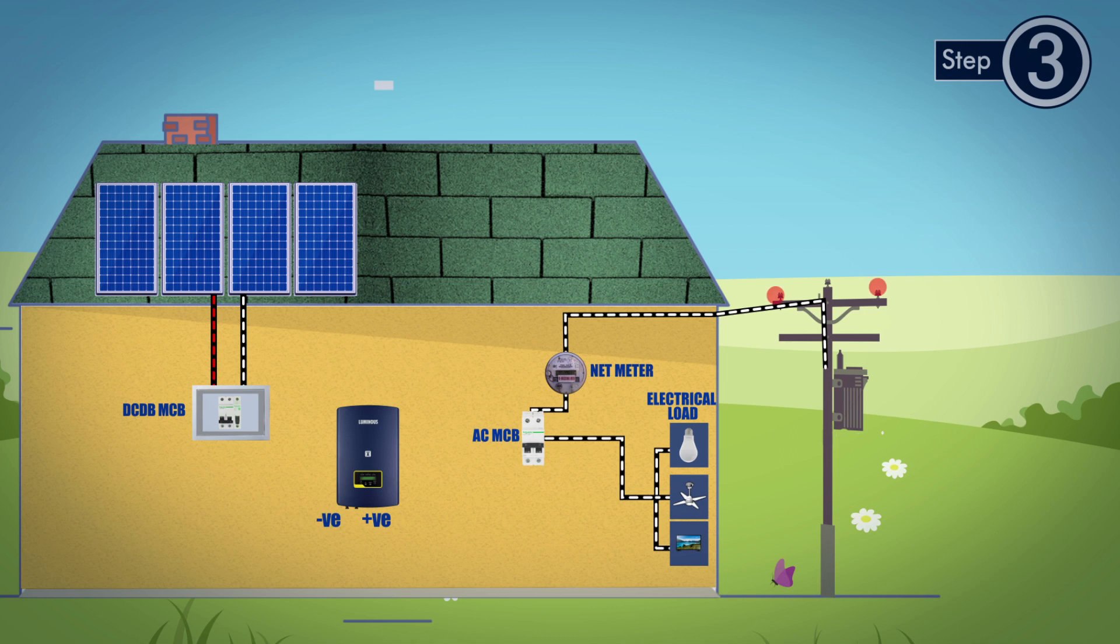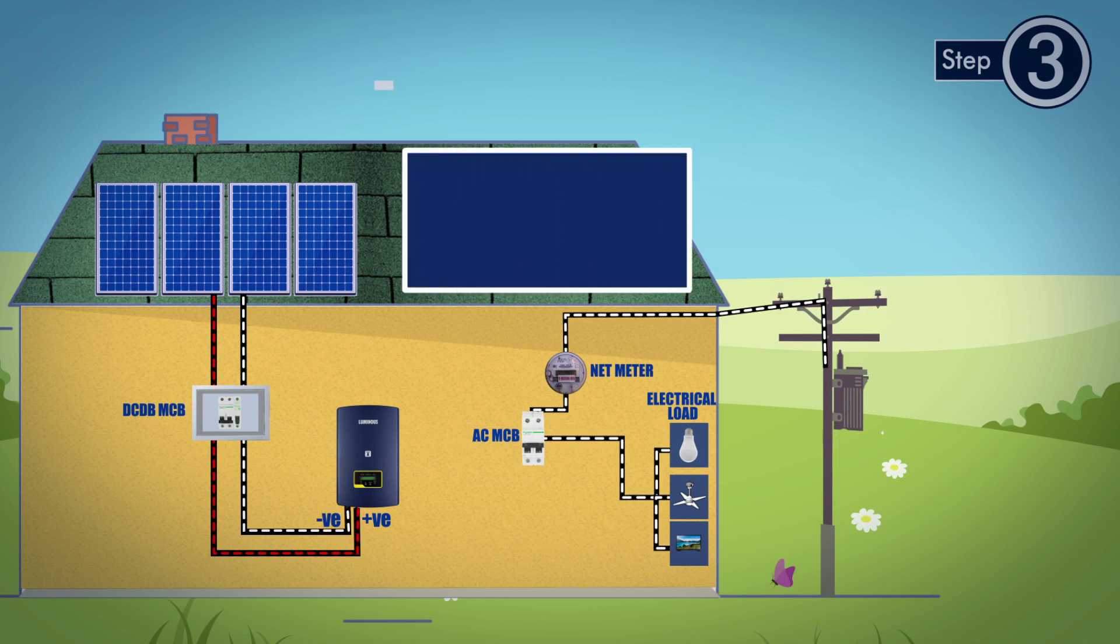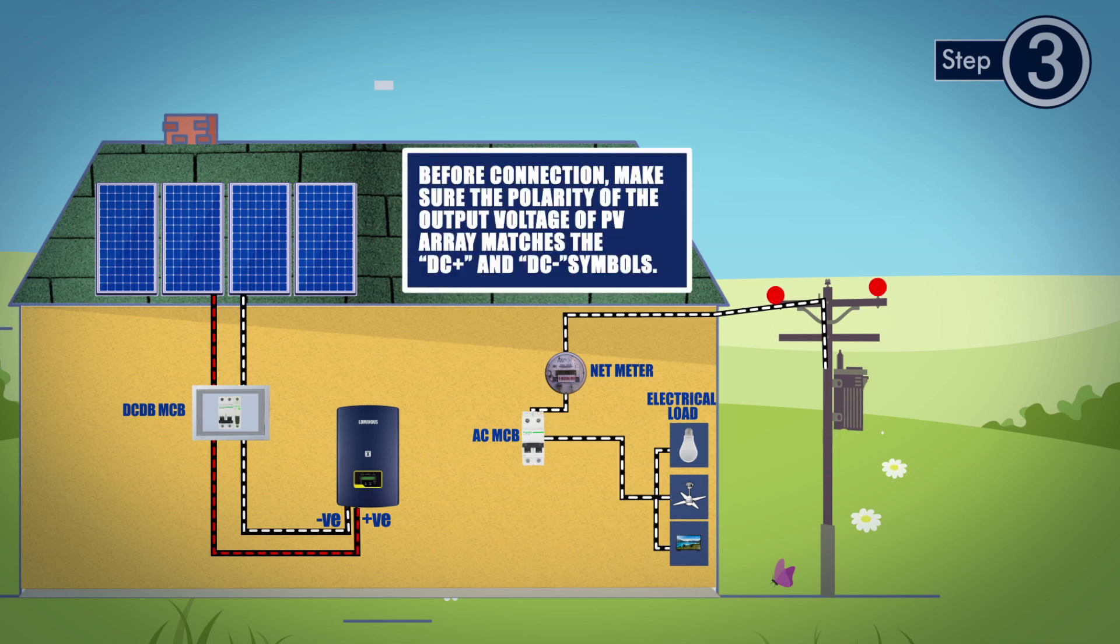Take the output from the DC MCB to the positive and negative terminals of the DC1 on the inverter. Before connection, make sure the polarity of the output voltage of PV array matches the DC positive and DC negative symbols.